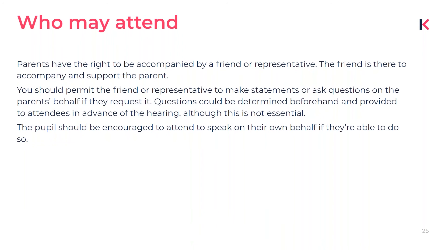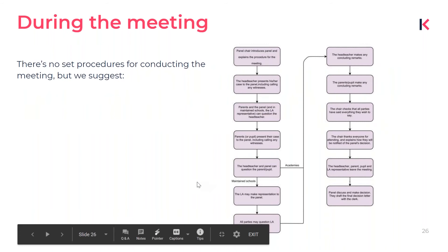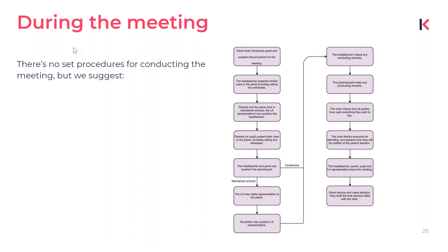There are also other people who may attend. Parents have the right to be accompanied by a friend or representative who can make statements or ask questions on the parent's behalf if requested. If you'd like, you can have questions determined beforehand so that attendees can receive them in advance of the meeting, but that's not actually necessary. The pupil is also encouraged to attend and speak on their own behalf if they choose to do so.